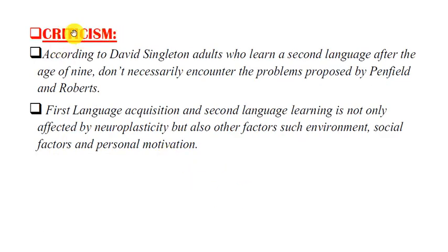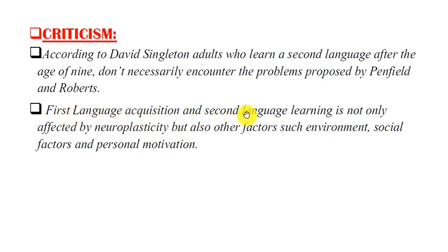Here are some limitations of the critical period hypothesis. According to David Singleton, adults who learn a second language after the age of nine don't necessarily encounter the problems proposed by Penfield and Roberts. Furthermore, first language acquisition and second language learning are not only affected by neuroplasticity but also by other factors such as environment, social factors, and personal motivation.